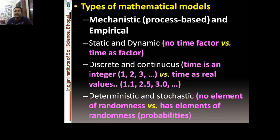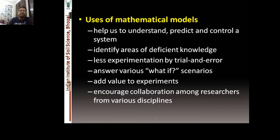Another classification is discrete versus continuous models. In a discrete model, time is an integer — one, two, three — whereas in a continuous model, time takes real values such as 1.1, 2.5, 1.3, and so on. Models can also be deterministic or stochastic. In deterministic models, there is no element of randomness or probability involved, whereas in stochastic models, an element of probability is present.